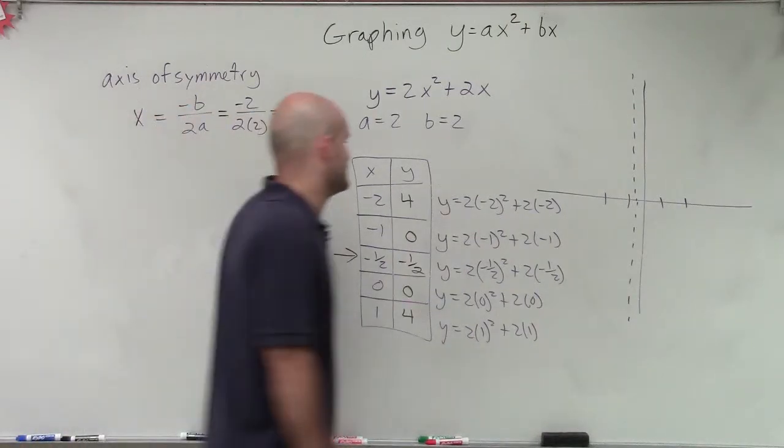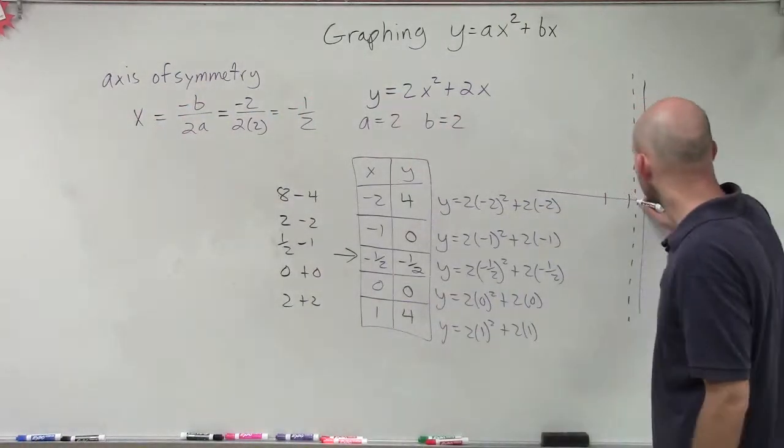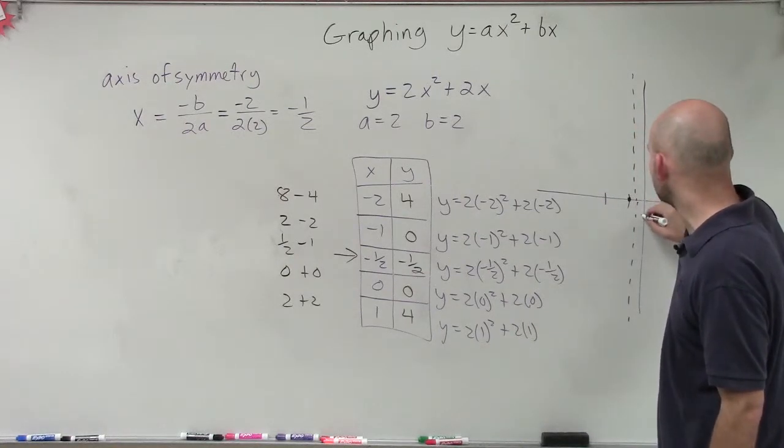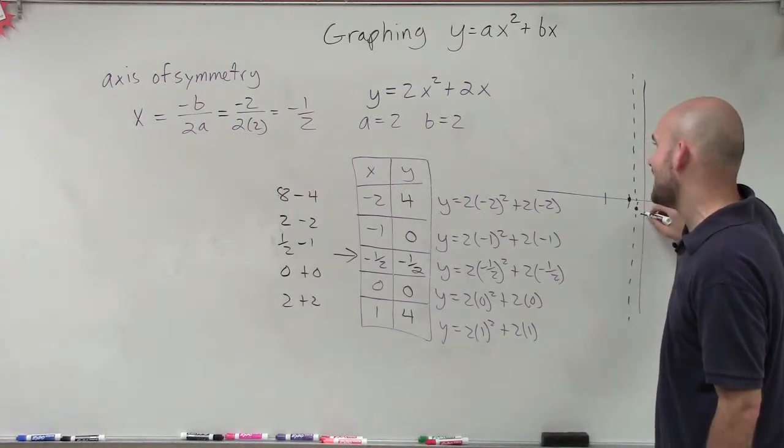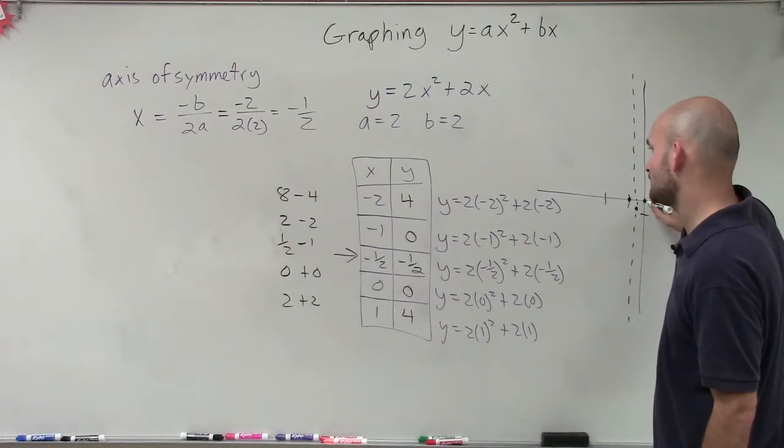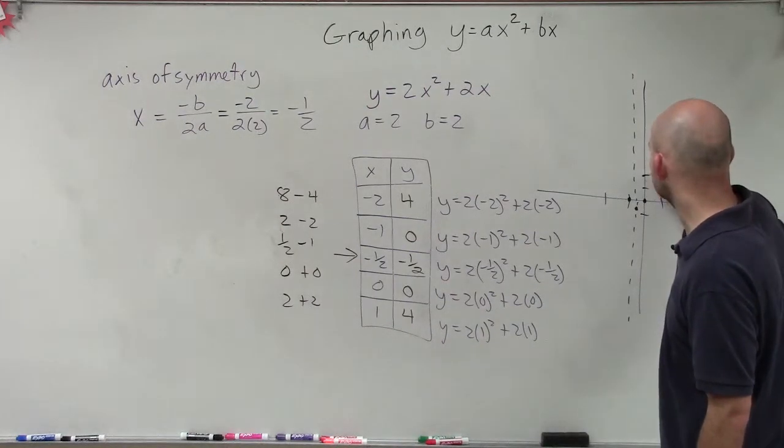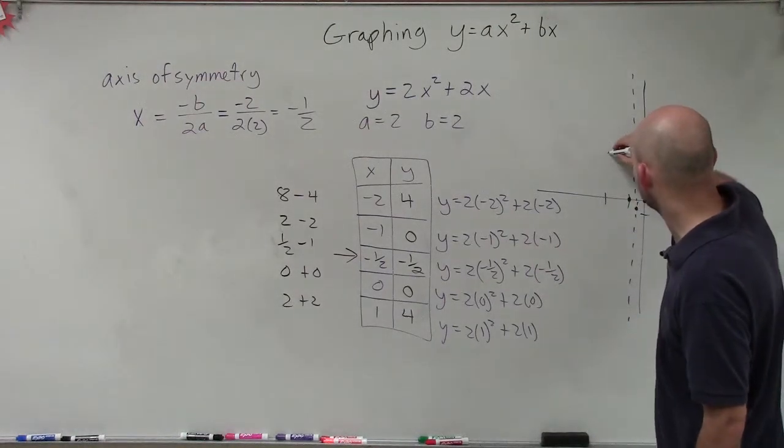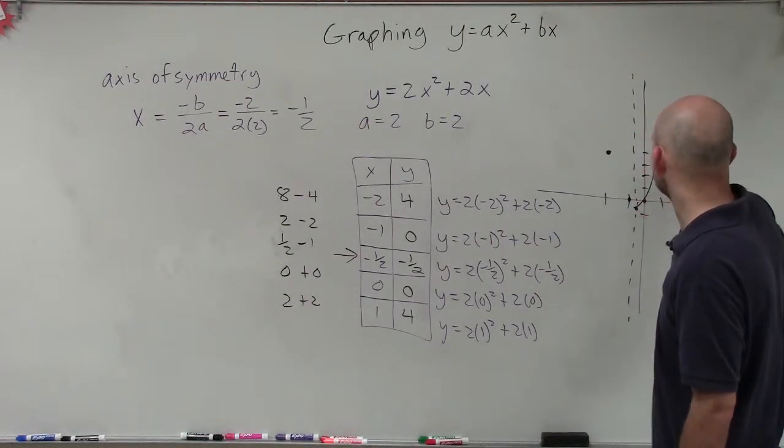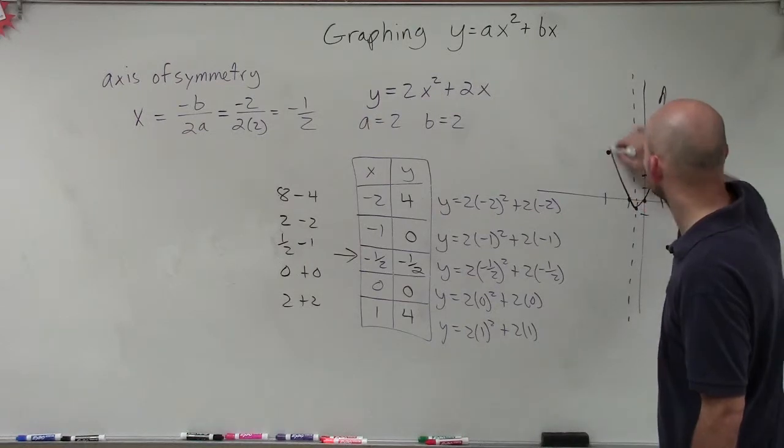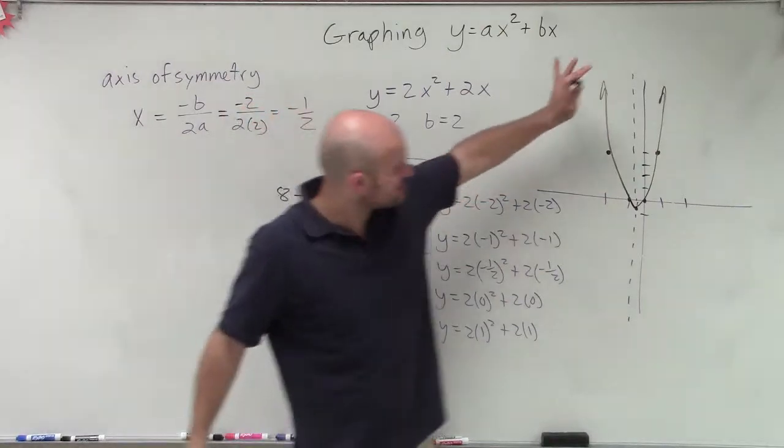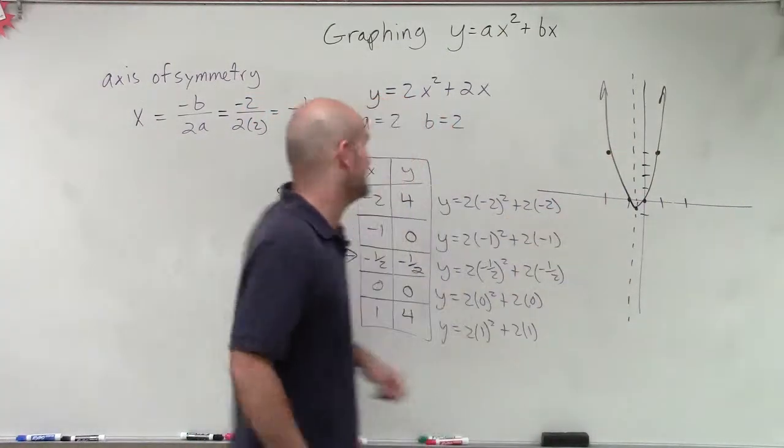So now let's plot our points. At negative 1, I have 0. At negative 1 half, I go down to negative 1 half. At 0, I have 0. At 1, I have 4. 1, 2, 3, 4. And at negative 2, I have 4. So my graph is going to look something like that, where you can see now my axis of symmetry has split my quadratic evenly in half.